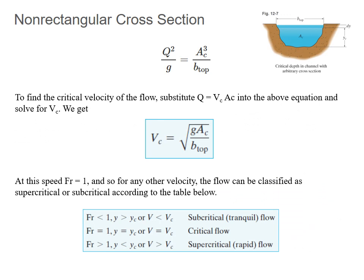For a non-rectangular cross-section, the critical velocity can be found by substituting back into the equations. At this speed, the Froude number equals 1, and for any other velocity the flow can be classified as supercritical or subcritical according to the classification table.